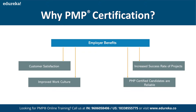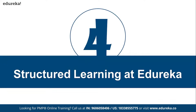Once customer satisfaction is achieved and the project is implemented correctly to the production environment, the success ratio will increase. We usually have three statuses: red, amber, and green. If a project is on track in each and every phase, the success ratio will be higher. These are the benefits the employer gets.